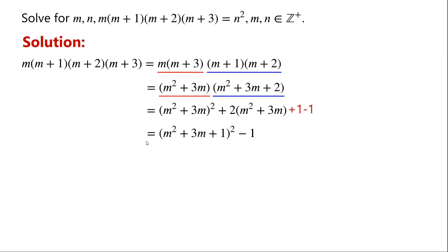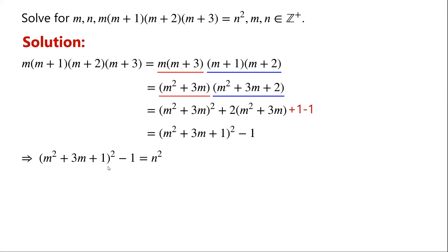The first three terms can be written as a perfect square: (m squared plus 3m plus 1) squared. So now we've written the left-hand side of the equation as (m squared plus 3m plus 1) squared minus 1.